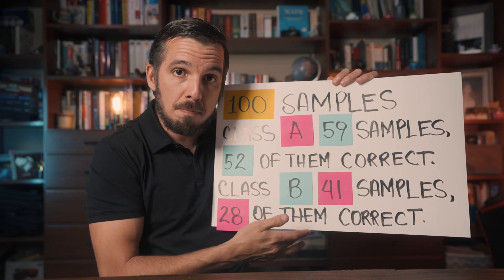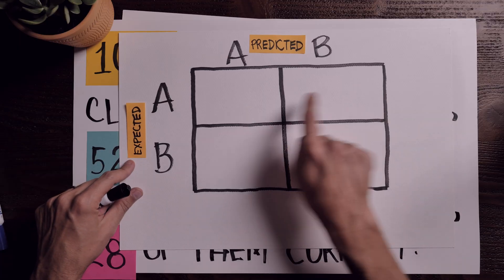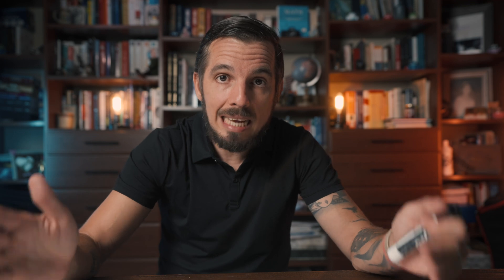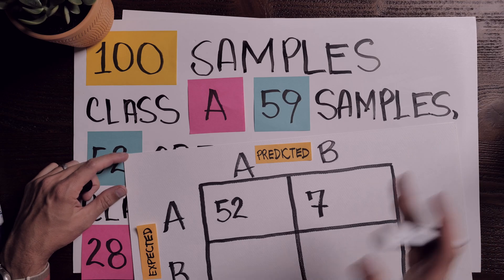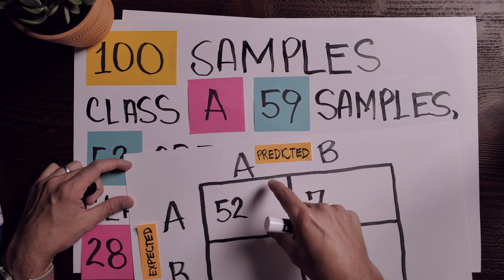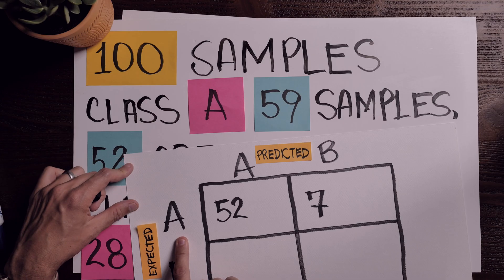With this data, we can now fill up our confusion matrix. We have 100 samples total, so when we finish filling it up, every cell should sum to 100. Starting with the first cell: how many samples were correctly predicted as class A? That's 52. We had a total of 59 samples, so 59 minus 52 gives us 7 samples that were incorrectly predicted. Notice how I read the cells: what we expect goes this way and what we predicted comes down this way. So: how many samples did we expect to belong to class A that were predicted as class A?